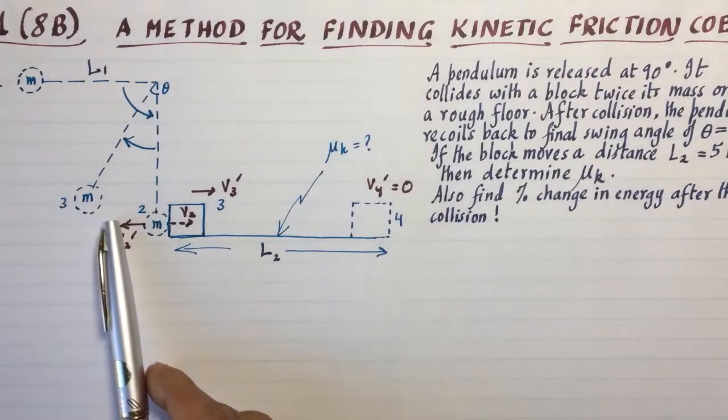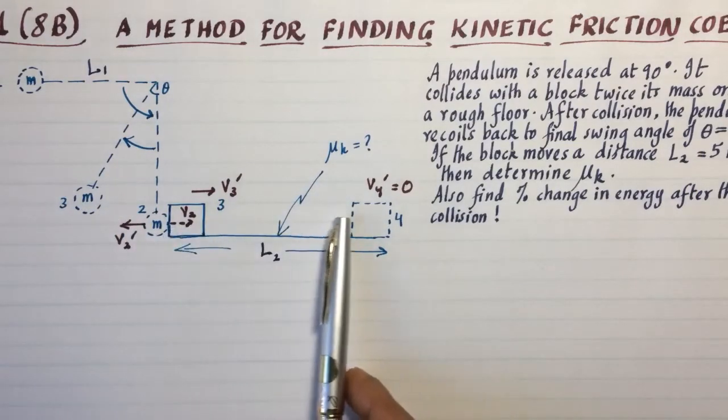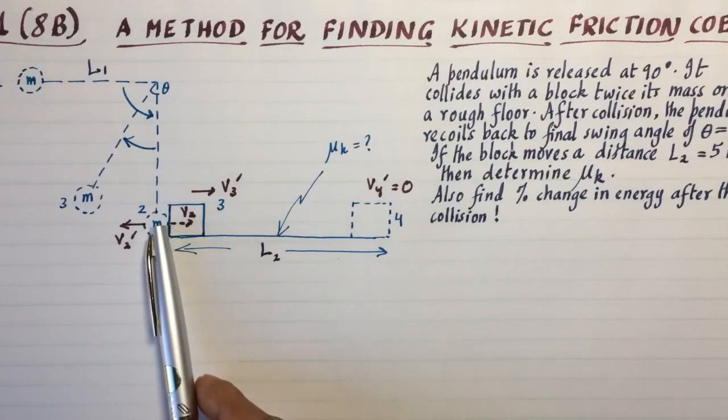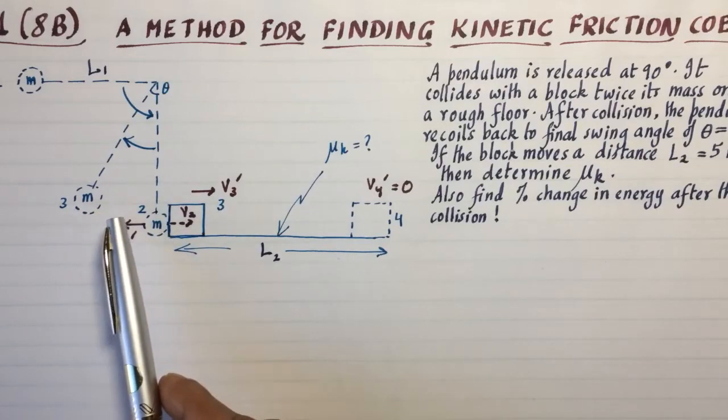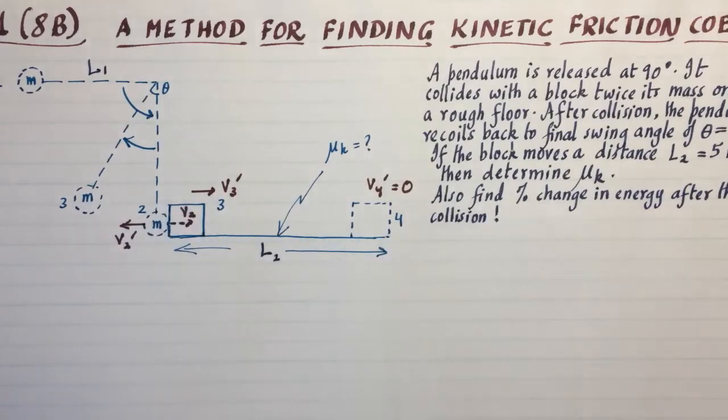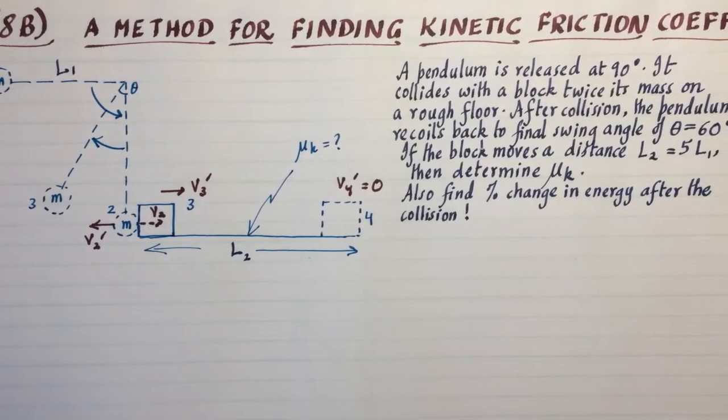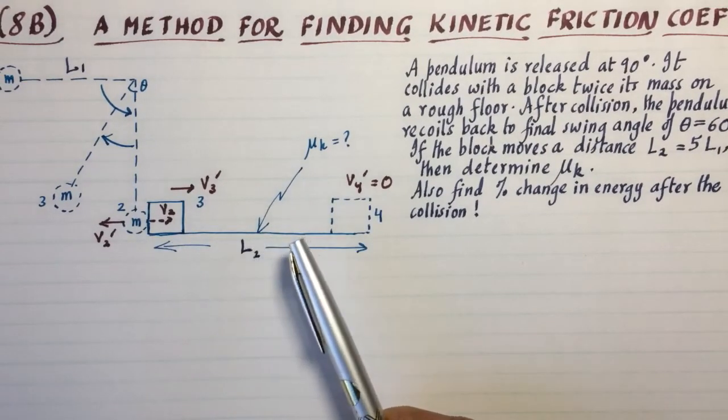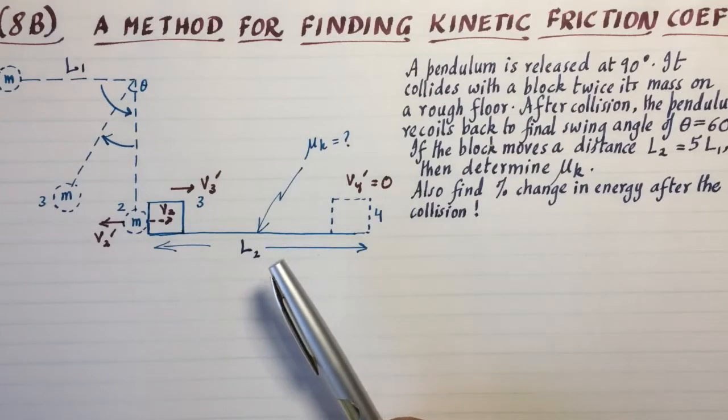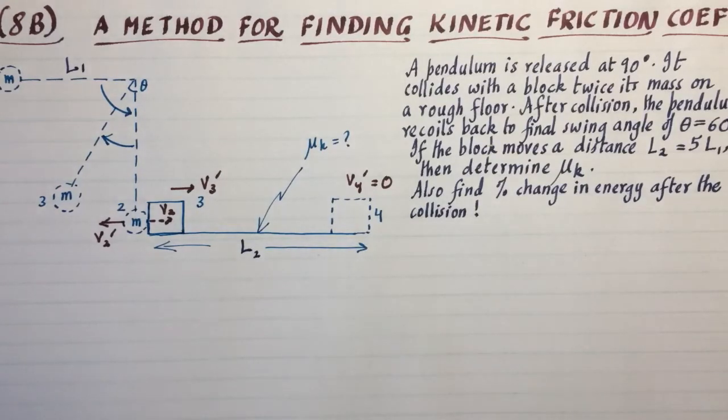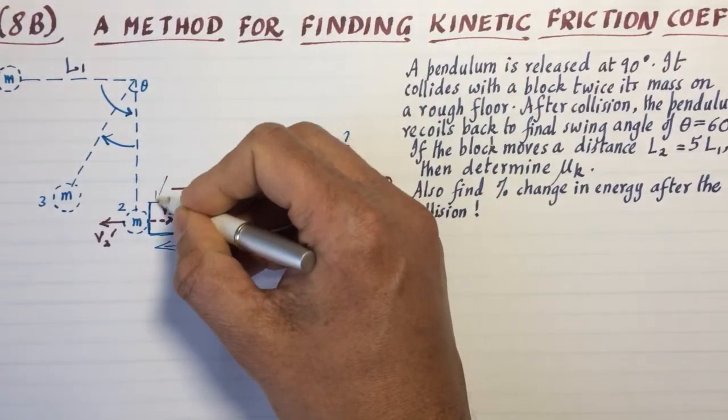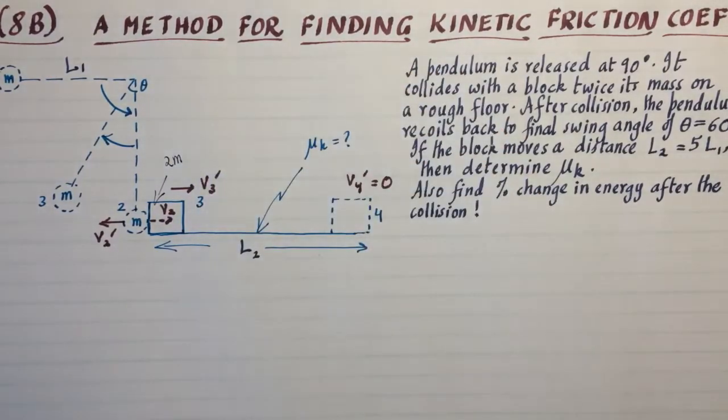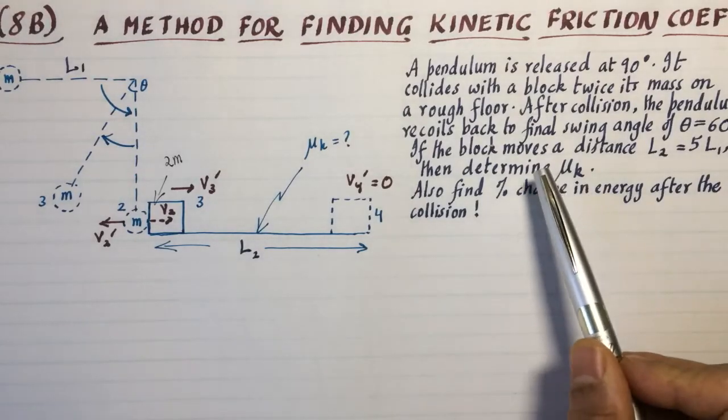So I bill it as a method for determining the kinetic friction coefficient. What we have is a pendulum that's released at a 90 degree angle. It swings, hits this block, and sends this block moving to the right. Meanwhile, the pendulum itself bounces back to some final angle, which I call theta. In the problem statement, I give some values. Theta is 60 degrees, the pendulum mass is m, while the mass of the block is two times the pendulum mass, or 2m. I don't believe I have said that anywhere, so maybe I should say that this is mass 2m here. We have to determine the change in the kinetic energy after collision, as well as mu sub k.